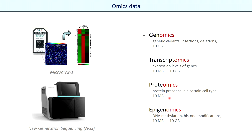In the literature you can find some studies that also mix different kinds of omics — for example, to realize a joint analysis of transcriptome and methylome together. It is completely possible with artificial intelligence approaches but a little bit more complicated. Today we will focus on a simple case.